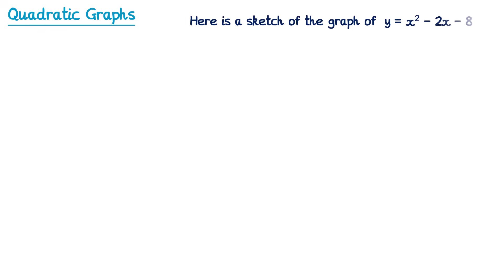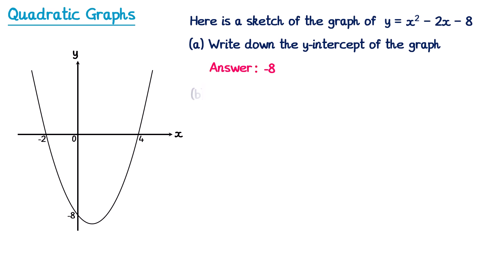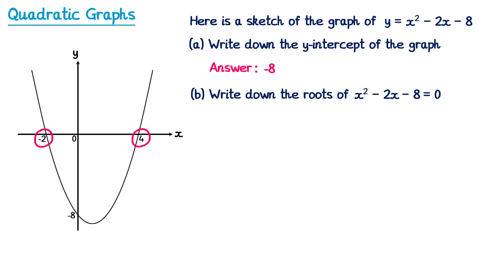Now we're going to look at one final question that's quite tricky. Sometimes they'll give you a sketch of a graph — not plotted accurately, just a sketch — and we can see some information about where it crosses the axes. First, writing down the y-intercept: we can see it crosses the y-axis at negative 8, so the answer is negative 8. For the roots — where the graph crosses the x-axis — that's at negative 2 and positive 4, so we write x equals negative 2 and x equals positive 4.